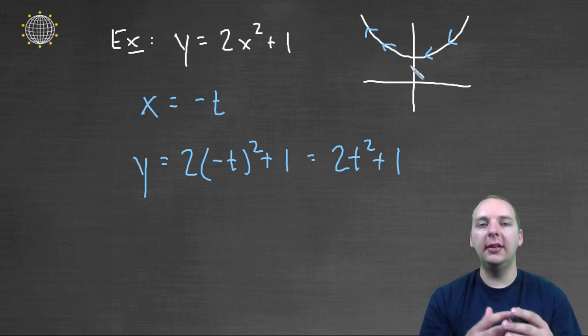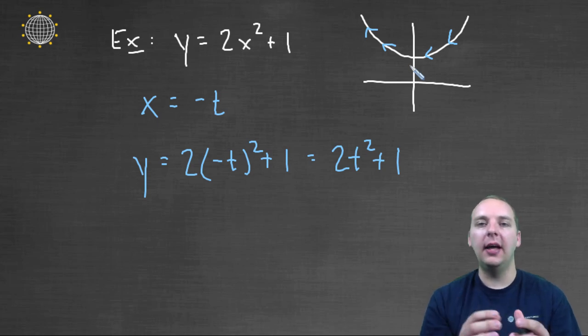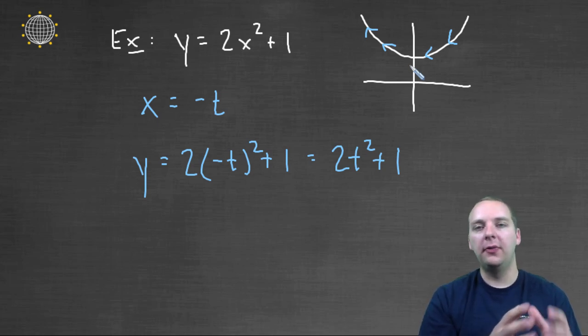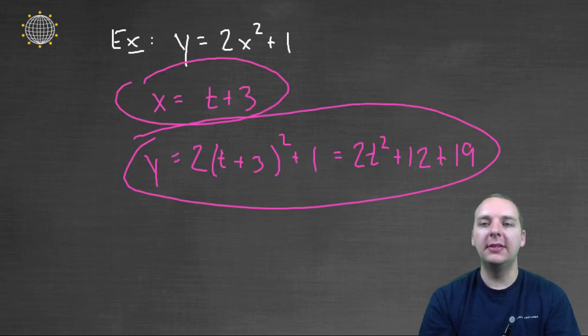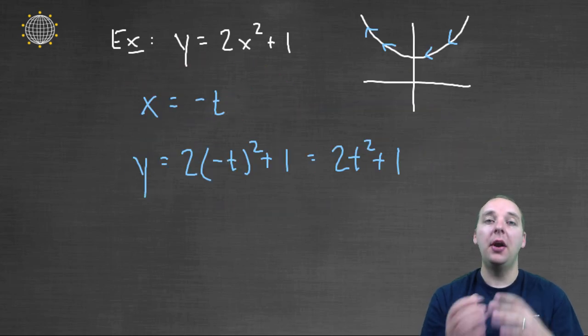So when you're creating these different parametrizations, you can make them be oriented left to right, right to left, progress through the curve faster or slower, or hit different x, y values at specified times. You can do whatever you want. But anyways, hopefully this example helps you better understand parametrizing a curve just a little bit better. I'll see you later.